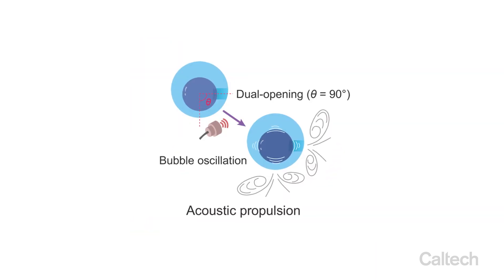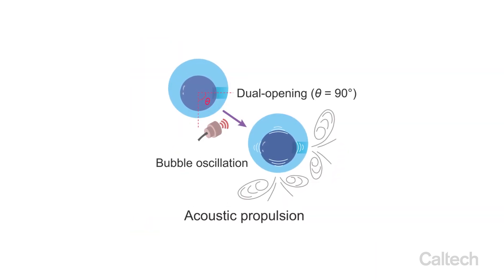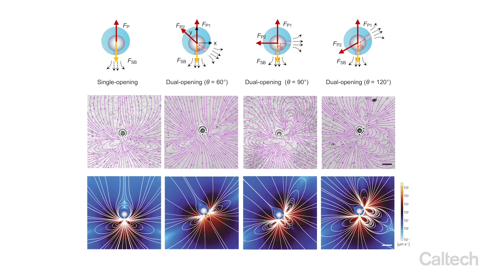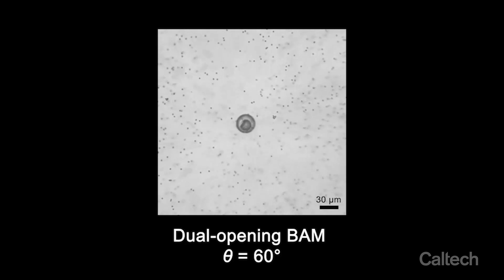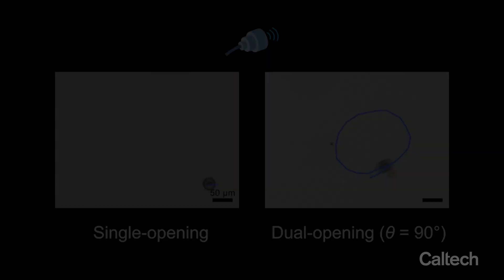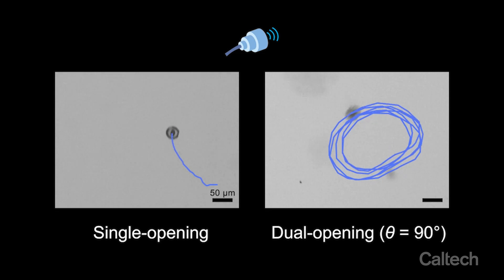In the acoustic field, the micro bubble vibrates, triggering micro streaming around the microstructure, eventually resulting in propulsion in the body fluid. We designed this micro robot to have two openings with a micro bubble inside. Such design will help the micro robot move very efficiently in the body fluid.